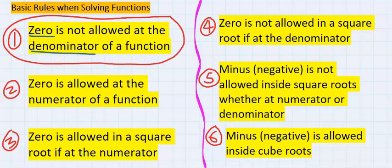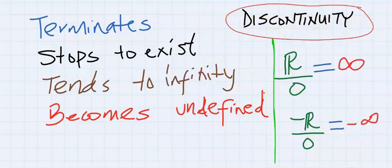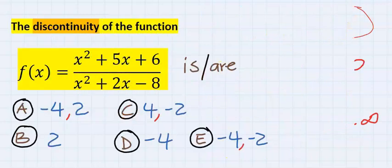That is, zero is not allowed at the denominator of a function. Because of this condition, we are going to solve for the quadratic expression at the denominator only.